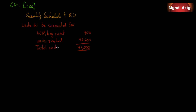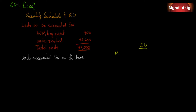Total units — this is the same whether we're using weighted average or FIFO. Now we move on to units accounted for as follows, and we're going to compute our equivalent units. We're given two cost categories: materials and conversion costs. So far nothing has changed.